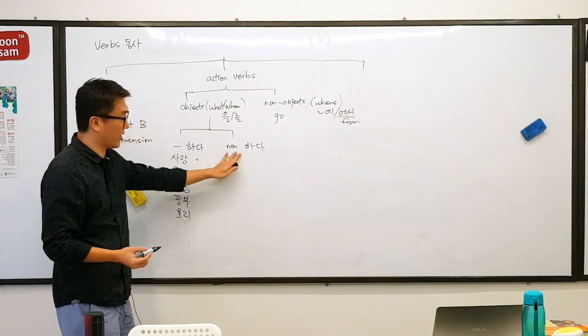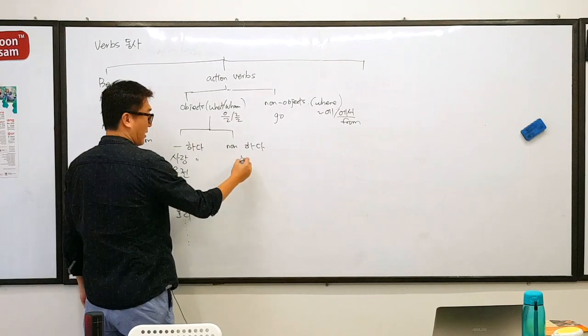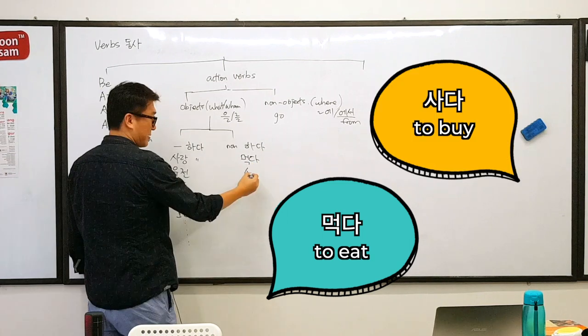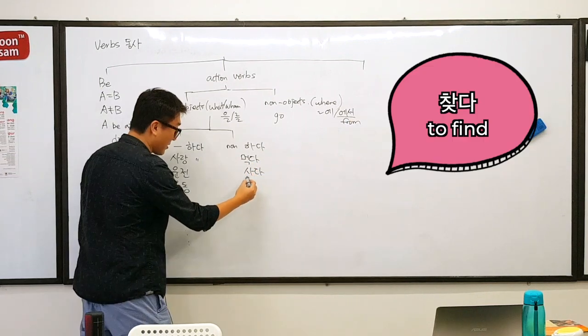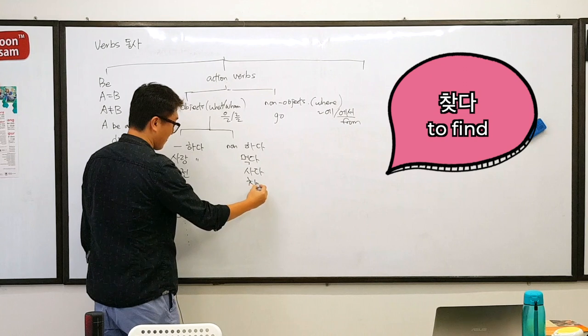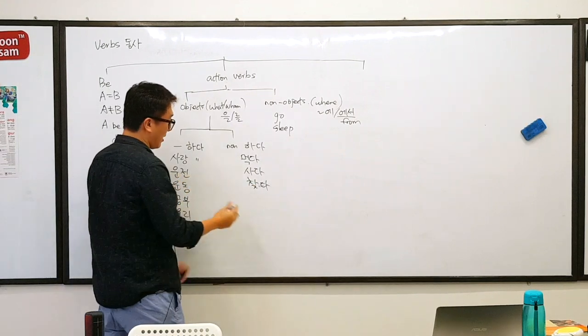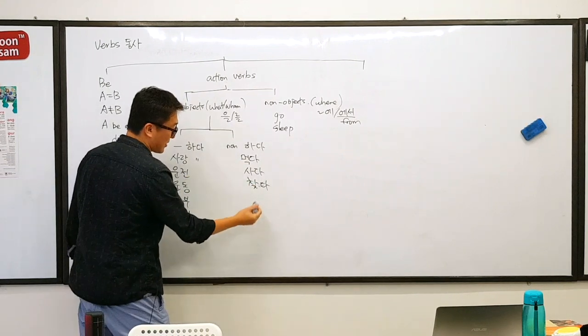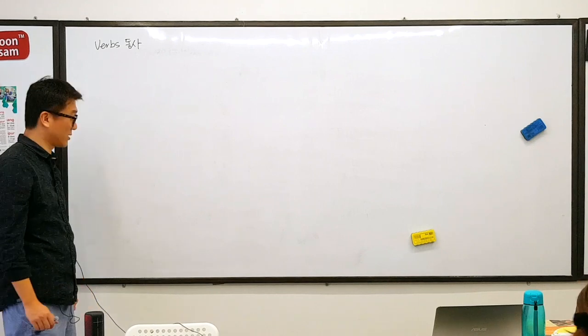There are non-하다 verbs. Which is, like, 먹다. 사다. 찾다? 찾다? Yes. And there are many, many non-하다 verbs as well. 동사.